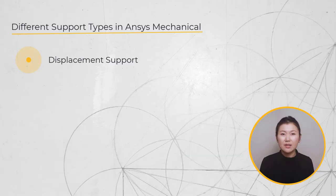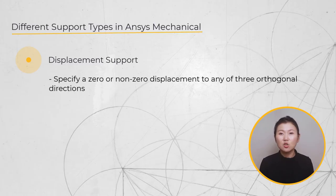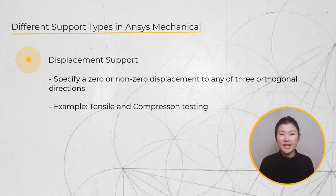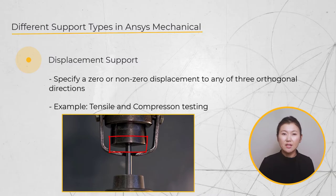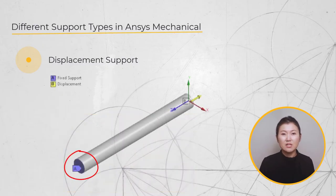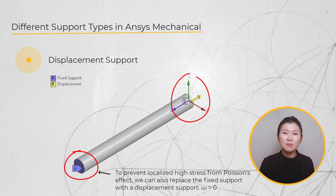Now let's move to the next support type: the displacement support. A displacement support allows us to specify a zero or non-zero value to any of three orthogonal directions. This support type can be used to model very common scenarios like displacement-controlled testing of materials such as tensile or compression tests. In a tensile test simulation, we can apply a fixed support at one end to model the fixed rigid jaw, and a displacement support at the other end to model the rigid jaw pulling the specimen.